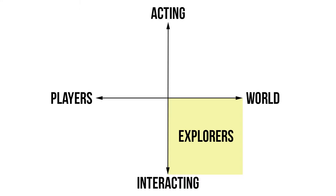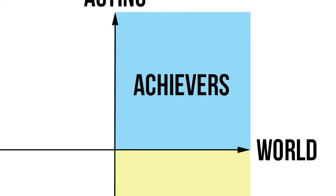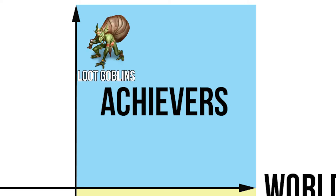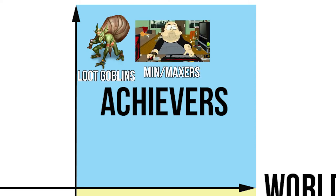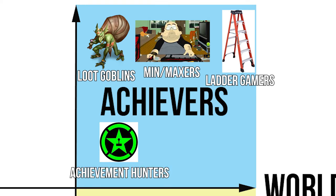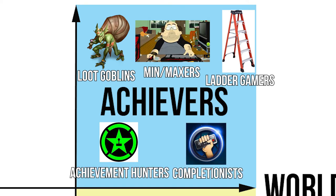On the other hand, there are some players who prefer acting upon the game and its mechanics rather than seeing it as a two-way relationship. These players are deemed achievers. For example, some achievers enjoy obtaining the best loot possible or getting the best stats. In multiplayer contexts, these players might find fun in being able to climb the ladder and achieving top ranks. You'll also find achievement hunters and completionists here.